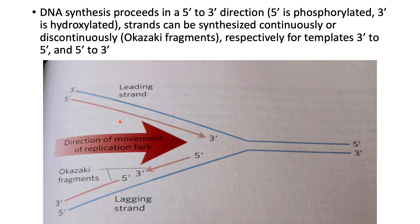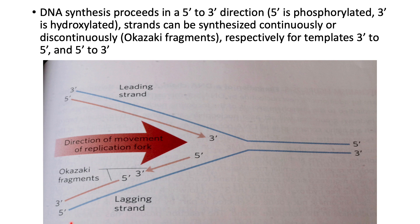DNA synthesis proceeds in a 5' to 3' direction, where 5' is the phosphorylated end and 3' is hydroxylated. This is the leading strand, which goes 5' to 3'. The direction of the replication fork movement follows the division of the parental strand. The lagging strand has smaller segments of 5' that open up incrementally. These are called Okazaki fragments — discontinuous fragments that are eventually ligated together. You get a direct copy of the original 3' to 5' strand.